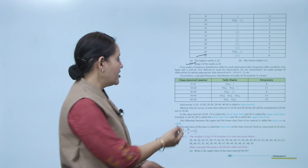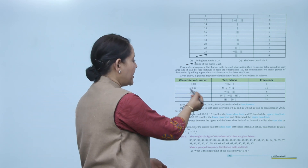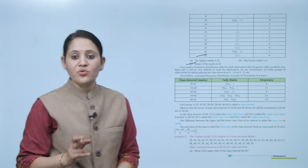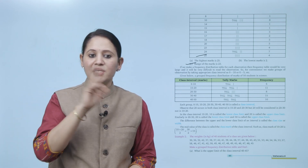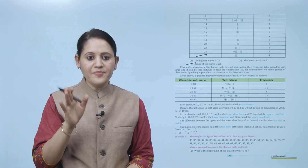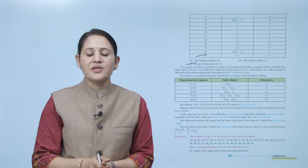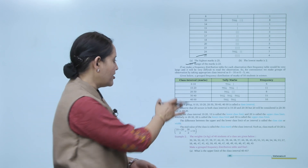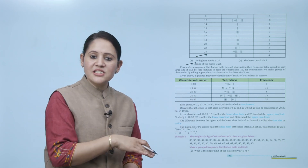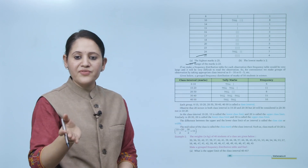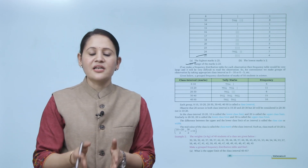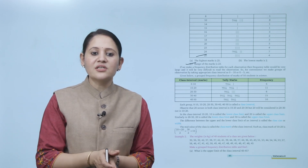So 20 appears in both intervals, but it will be counted in 20–30, not in 10–20. In the class interval 10–20, 10 is called the lower class limit and 20 is called the upper class limit. Similarly, in 40–50, 40 is the lower class limit and 50 is the upper class limit. In 20–30, 20 is the lower class limit and 30 is the upper class limit.